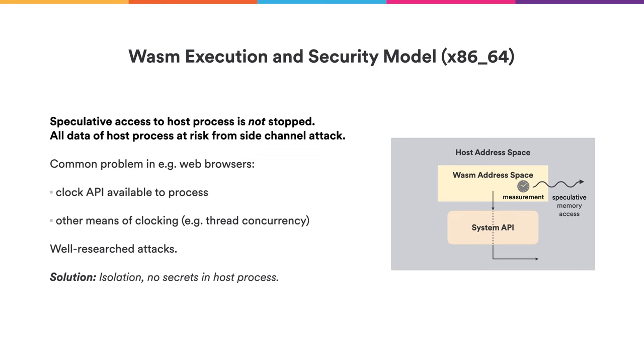This is a commonly known problem. Typical scenarios, for example web browsers, execute foreign code — more commonly JavaScript but also WebAssembly — in a host process. This process typically has no problems triggering some kind of speculative execution in the host process, and there is also a clock API available. This means the WebAssembly process would have all means available to mount side-channel attacks to read the entire host process memory. These are very well-researched attacks with well-known mitigations. In everyday browsers, the host process is a non-privileged process that holds no secrets, such that if the embedded WebAssembly process wants to leak any data, there is simply no secret worth leaking.